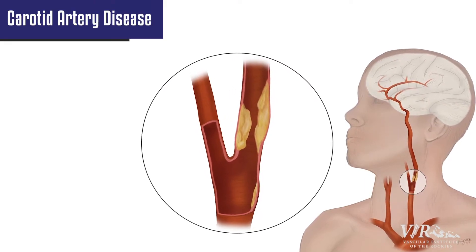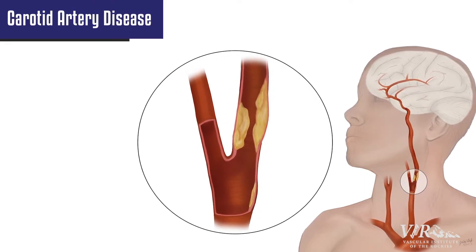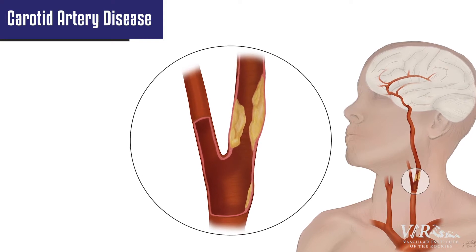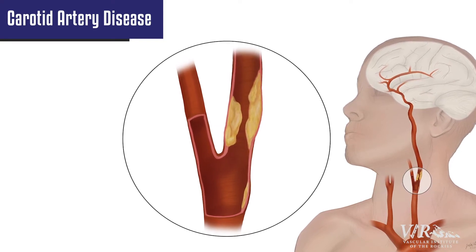Carotid artery disease is like any other vascular disease — it's the development of plaque or atherosclerosis in the carotid wall. What happens in the carotids is these plaques get ulcerated, and that ulcer can develop thrombus which can break off and go up to the brain, causing a stroke or a mini stroke. In order to prevent patients from having massive debilitating strokes, we intervene on the carotid artery disease to remove that plaque or to stent it.